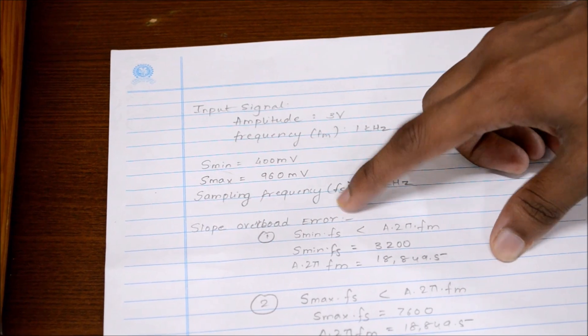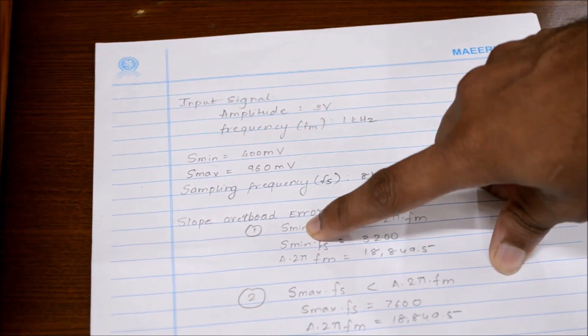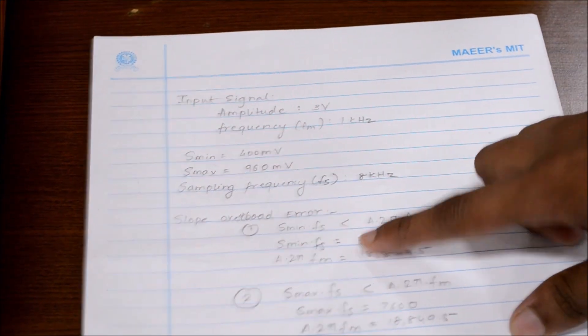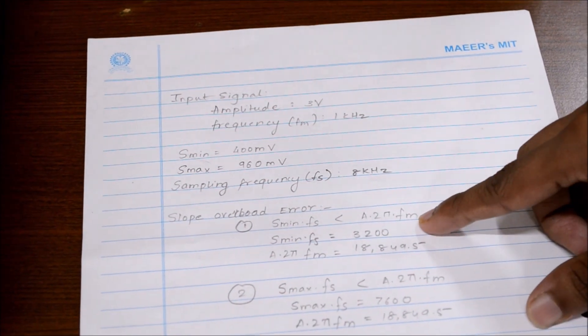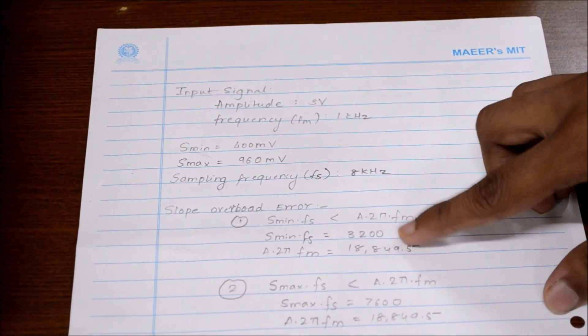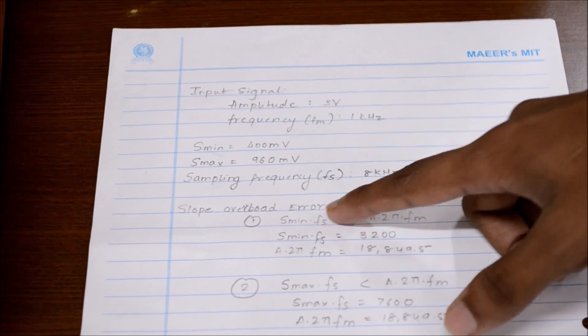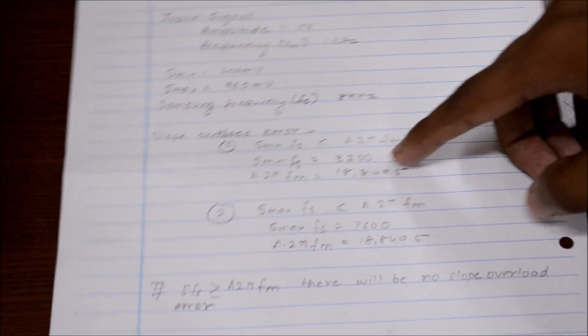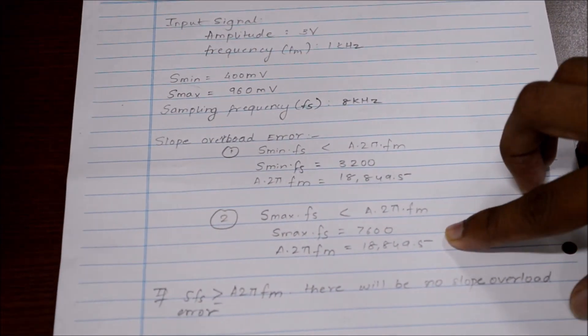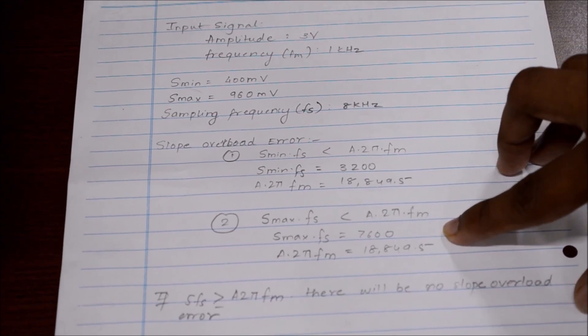The slope overload error is obtained when your step size into the sampling frequency is less than a into 2π fm. As you can see from the values over here, s min and s max into fm, both are less than a into 2π fm and hence we observe the slope overload error.